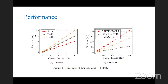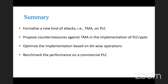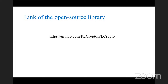The performance of CSHK and the corresponding PRF or PRG are practical as well. However, the performance of hash functions is not very good on PLC since they require many arithmetic operations that are not well supported on PLC. Our summary: we formalized new kinds of attacks like TMA, proposed countermeasures against TMA in the implementation, optimized the implementation based on bitwise operations, and evaluated performance on a commercial PLC. The open-source library is available at the following website.